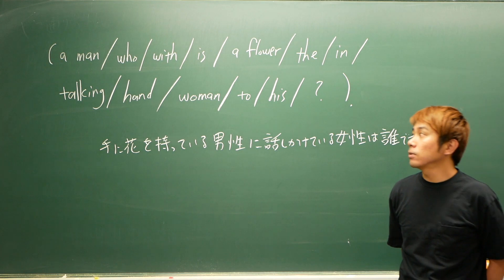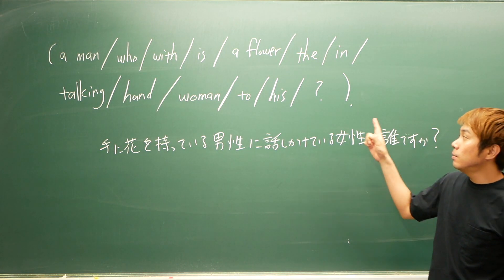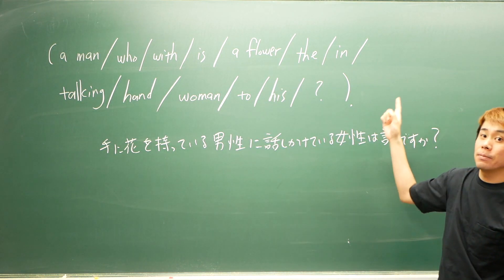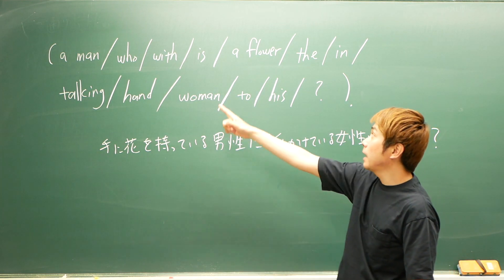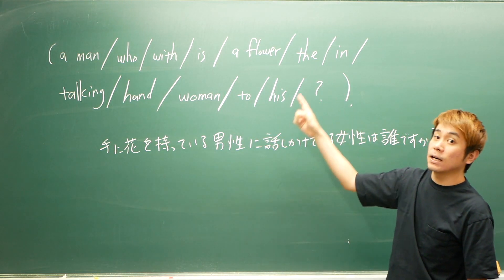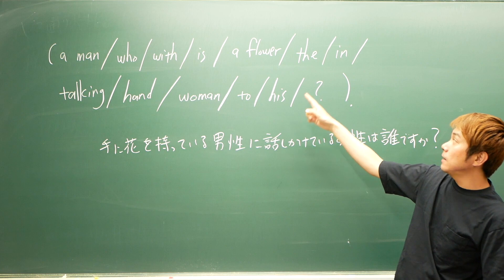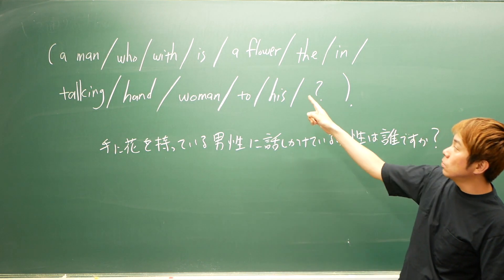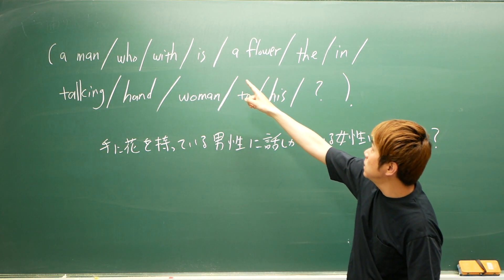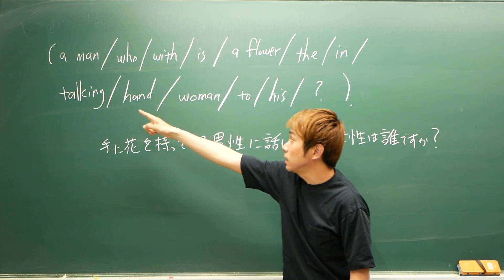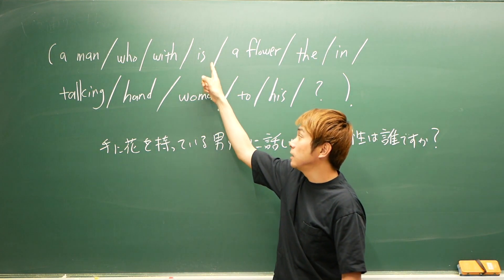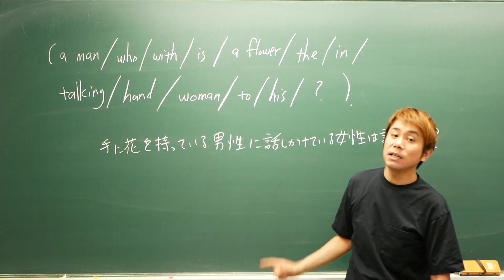じゃあこの問題の解説を始めたいと思います。これはもう全ての単語がバラバラにされた並び替え問題なので、どれから手をつけていいかちょっと分からないかもしれません。主語になりそうなやつもいろいろあるし、動詞もisがあるし、ing系がどこかで使えるやつもありますね。もしかしたらis talkingって思うかもしれん。